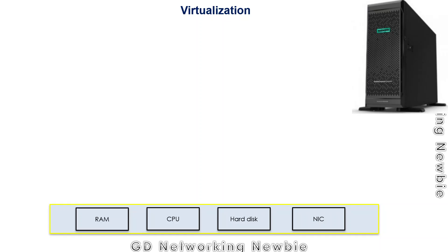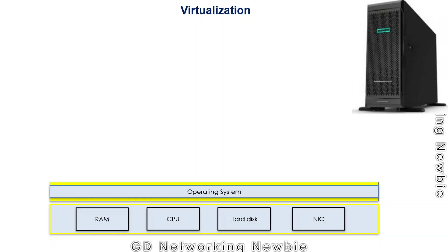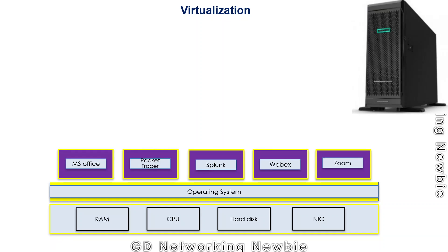In this video we are going to discuss virtualization. For example, if we have a computer or a server machine, it has hardware resources like RAM, CPU, hard disk, and network interface cards. On top of those hardware resources we have an operating system, because without an operating system we cannot utilize those hardware resources. On top of the operating system we install application programs like MS Office, Cisco Packet Tracer, Splunk, or Webex.